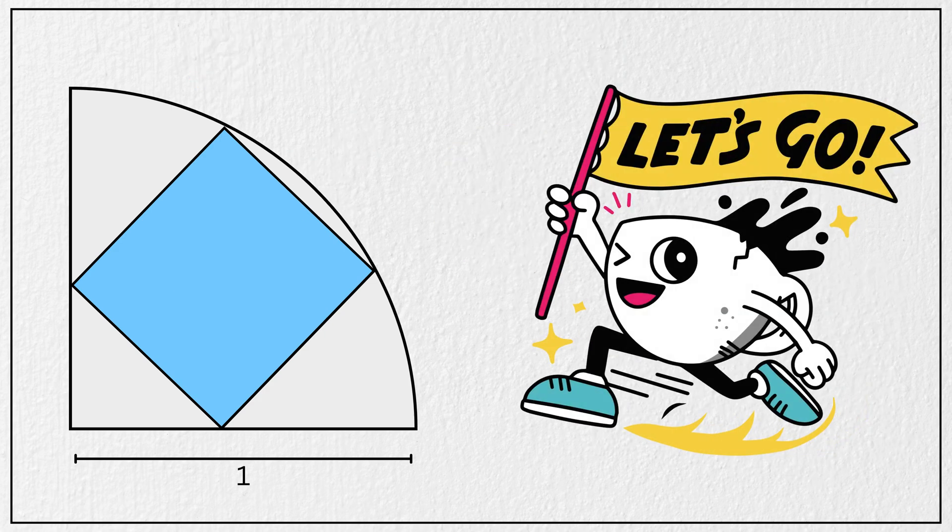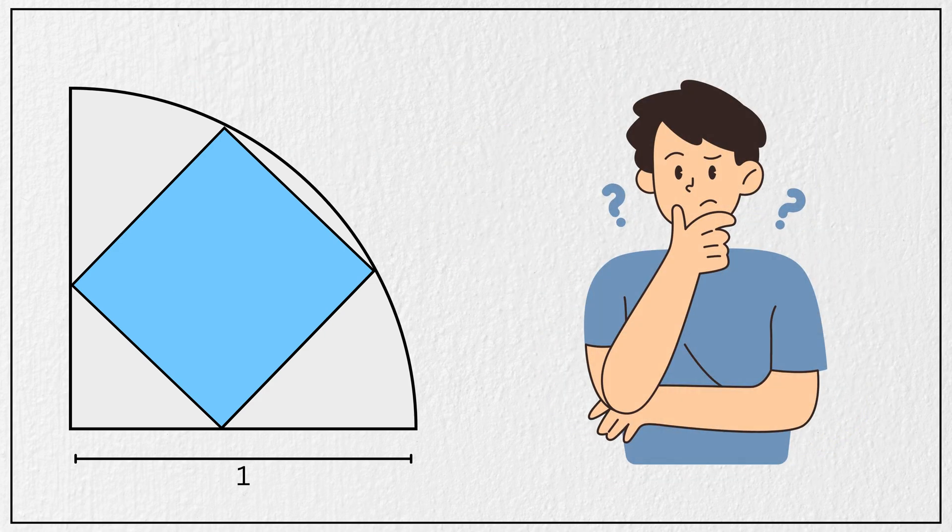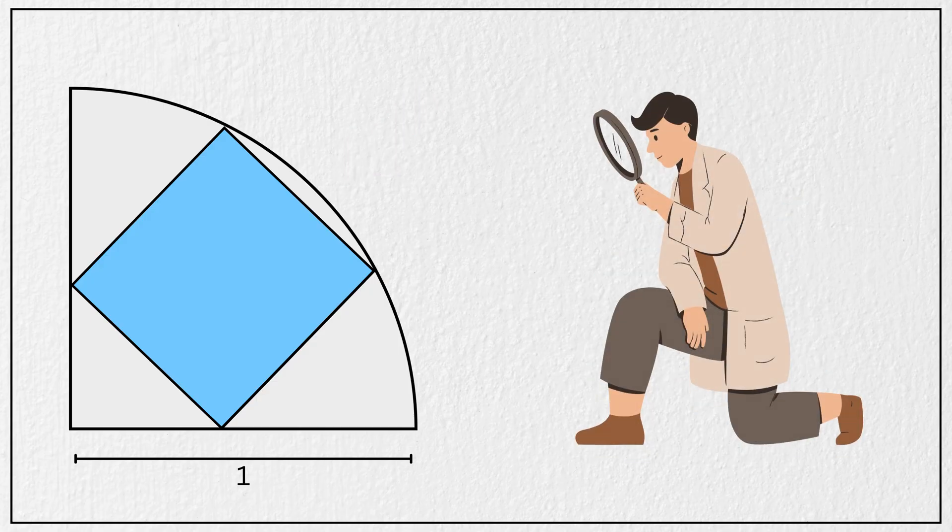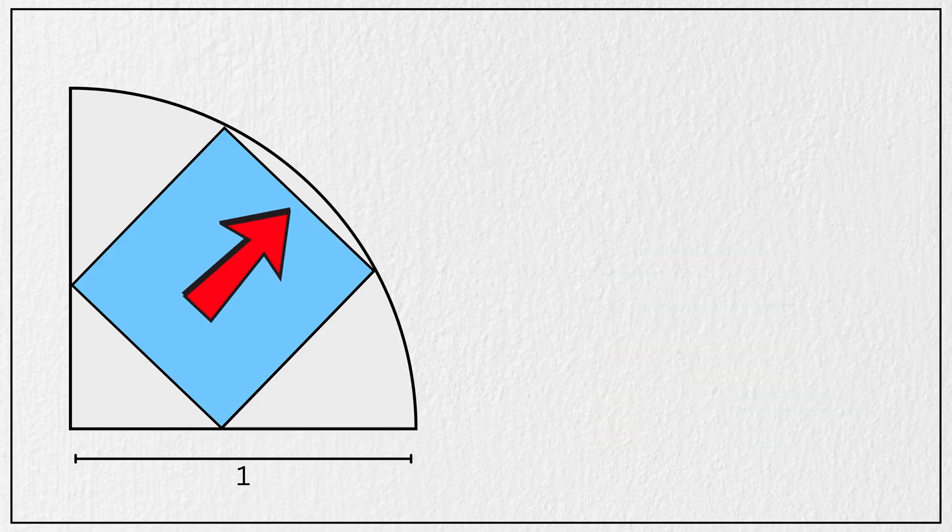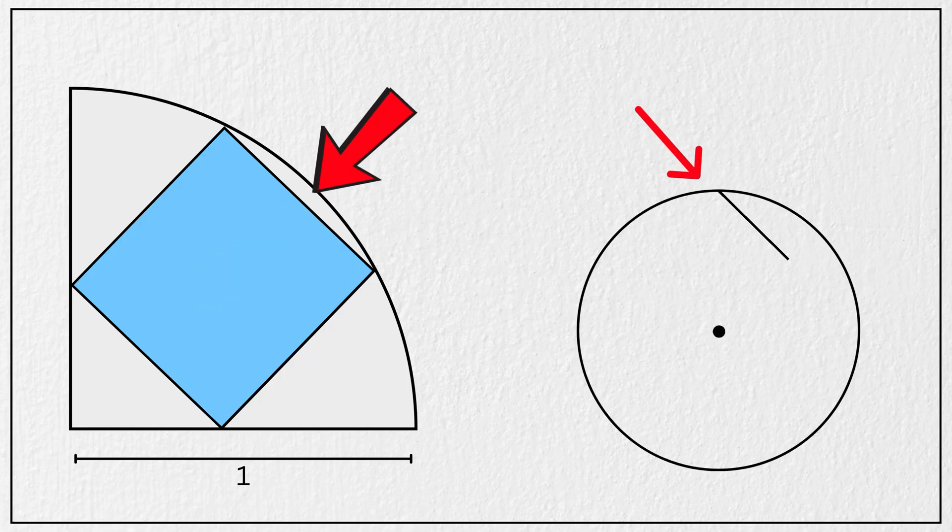Alright let's solve it together. But before we begin, let's first understand the structure of this figure. Notice something? This side of the square touches the arc of the quarter circle. That means this side of square is actually a chord of the full circle.